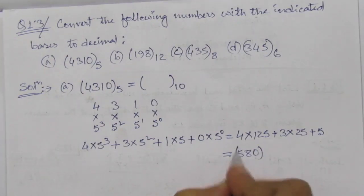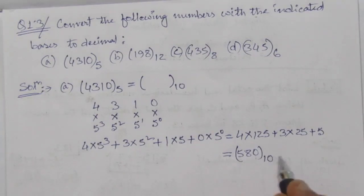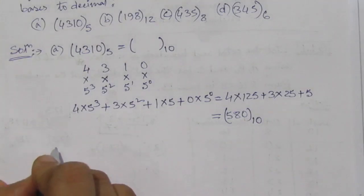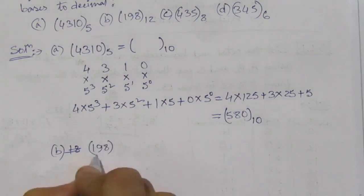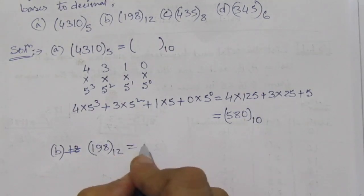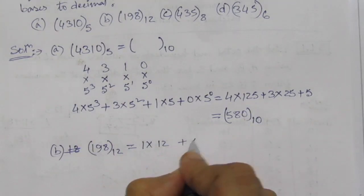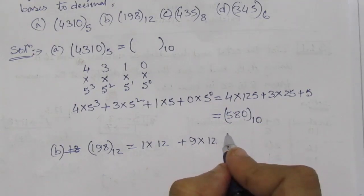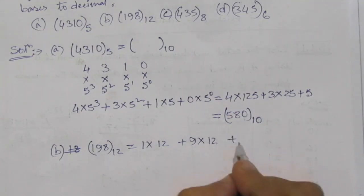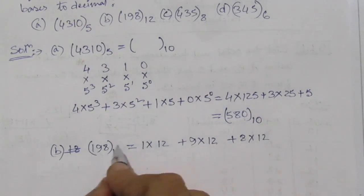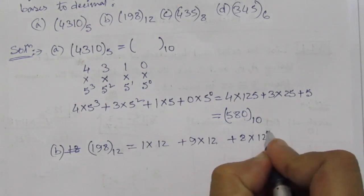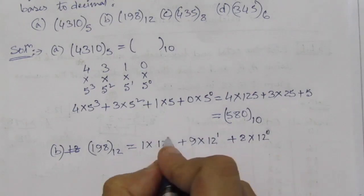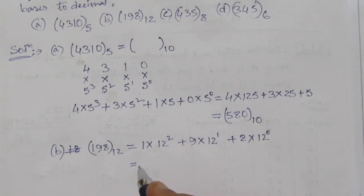Now let us see the second part (b): (198) base 12 equals 1 into 12 squared plus 9 into 12 to the power 1 plus 8 into 12 to the power 0. So the answer will be (260) base 10.